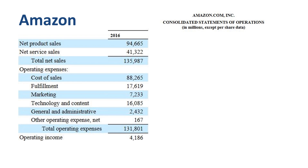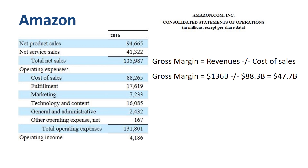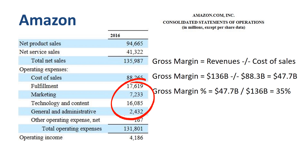Amazon had net sales of 136 billion. Gross Margin can be calculated by taking revenue and deducting cost of sales. Gross Margin is 47.7 billion, or 35% of revenue. Operating expenses like fulfillment, technology and content, marketing, and general and administrative expenses take up 32% of revenue, therefore Operating Margin is only 3%.